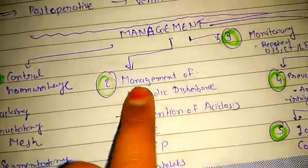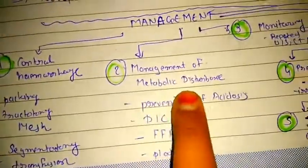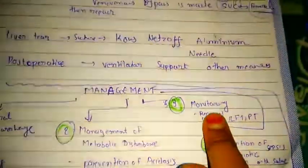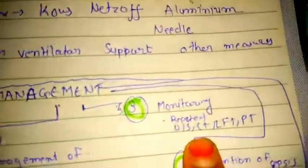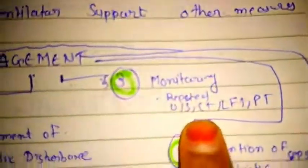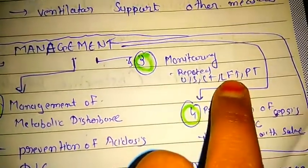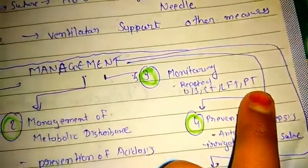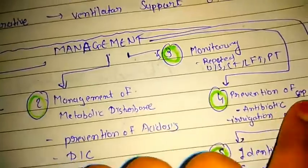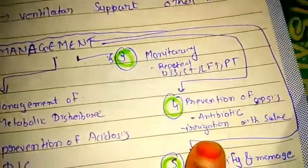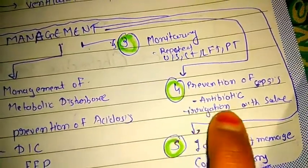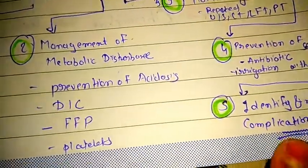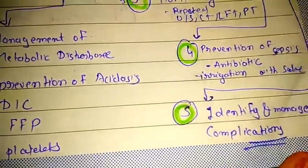Monitoring with repeated ultrasonography, CT scan, liver function tests, and prothrombin time. Then prevention of sepsis with antibiotics or irrigation with saline. Then identify and manage any complications.